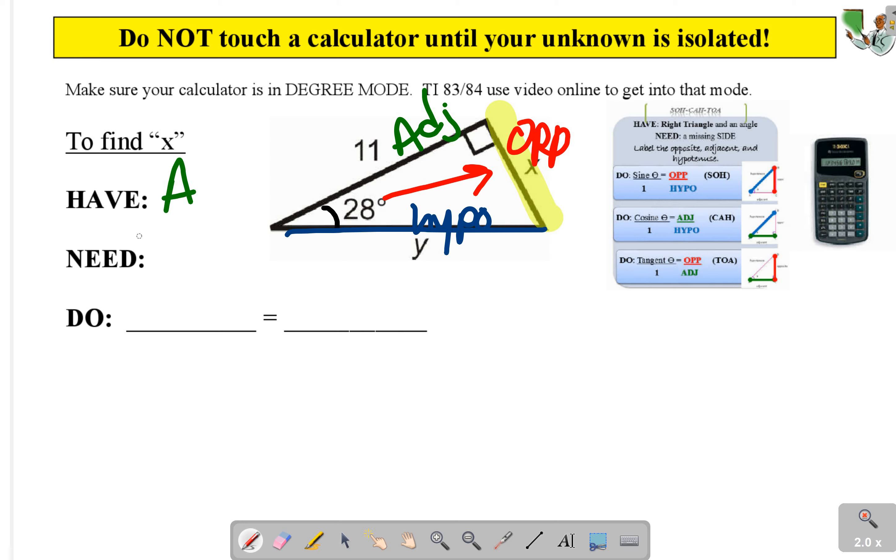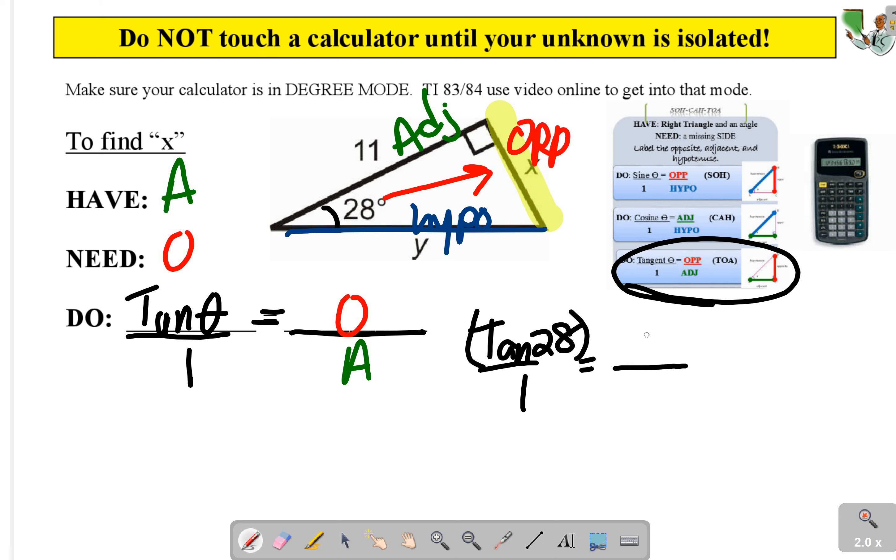In this case, we have the adjacent. We need the opposite. I have an opposite-adjacent combo. So you look right here, that's a tangent. So you write exactly that equation. Tangent of theta over 1 equals opposite over adjacent. So tangent of theta, which is 28, over 1 equals opposite, which is x, over adjacent, which is 11.